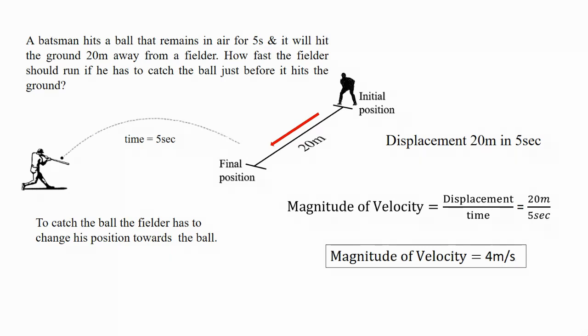But we already learned that the velocity depends upon magnitude and direction. So what is the direction of the velocity? Direction of velocity is the direction in which the fielder is moved.